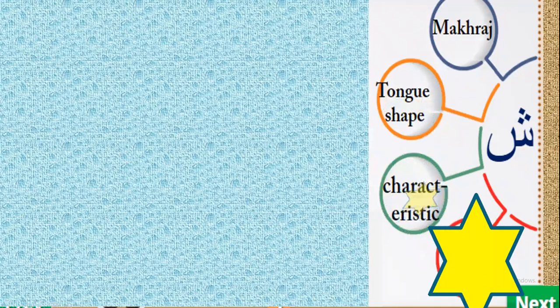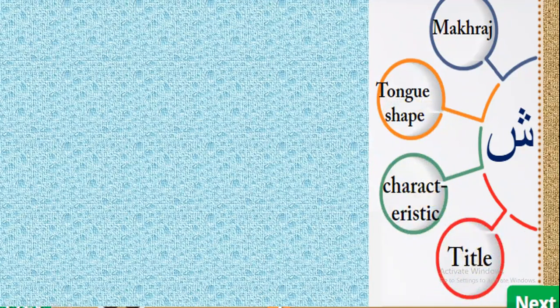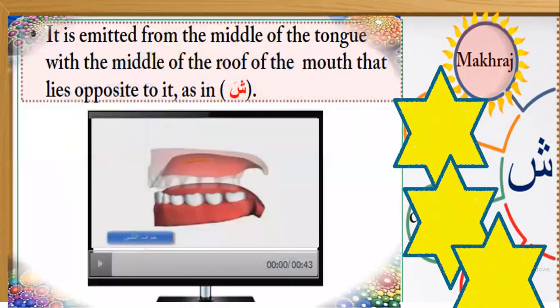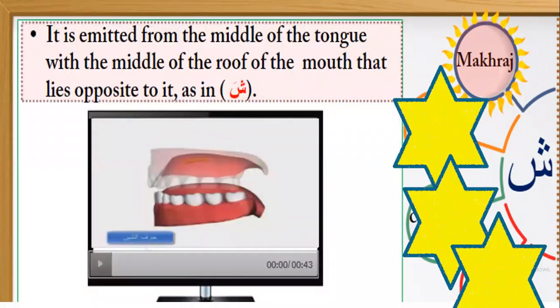Today inshallah we will study together four pointers of letter Sheen: makhraj, shape of the tongue, characteristic, and title. Let's start with makhraj. Where is the makhraj of Sheen? The sound comes from the middle of the tongue with the middle of the roof of the mouth that lays opposite to it, as in: shah, ash. From the middle of the tongue with the middle of the roof of the mouth.